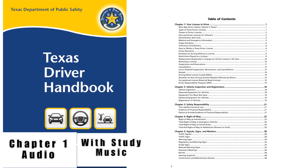Driver Record: A complete record of all your examinations will be recorded on your application and scanned into the driver license system where it becomes a part of your permanent driving record. Any convictions for moving traffic violations or crashes, including out-of-state records of convictions, will be recorded as part of your permanent driving record. To find out more information on driver records and how to obtain a copy of your record, visit www.dps.texas.gov/driverlicense/driverrecords.htm.